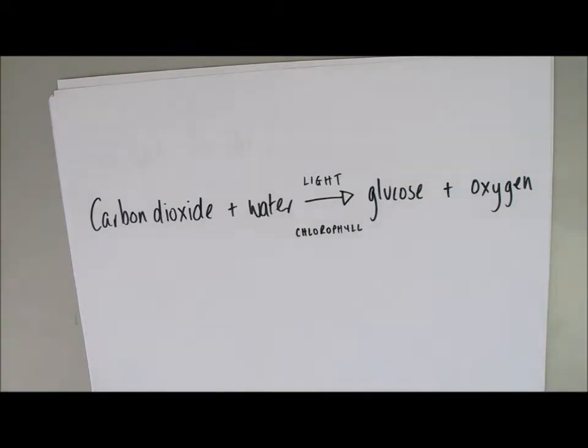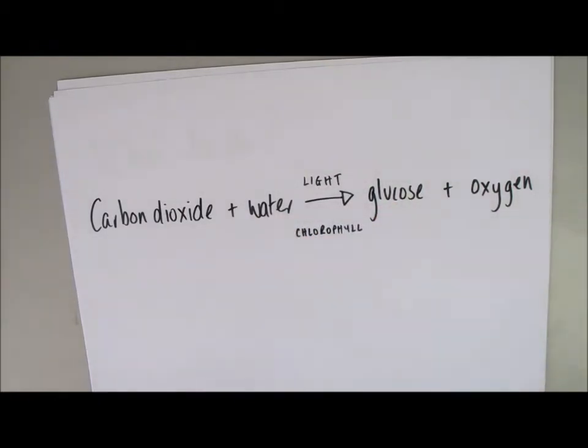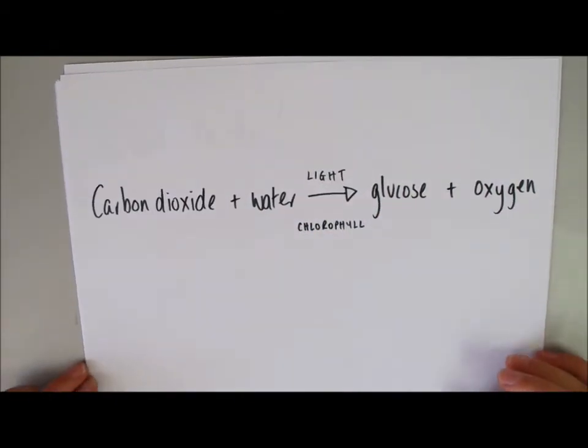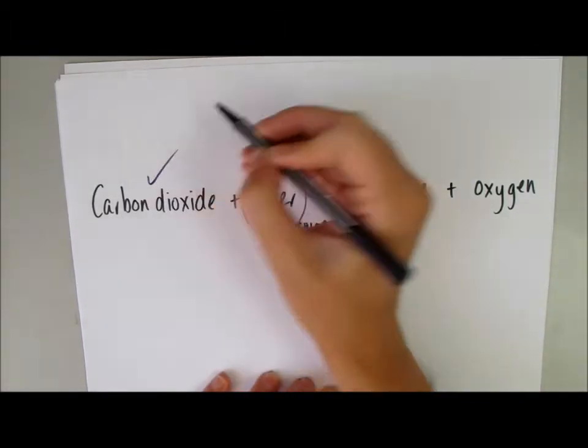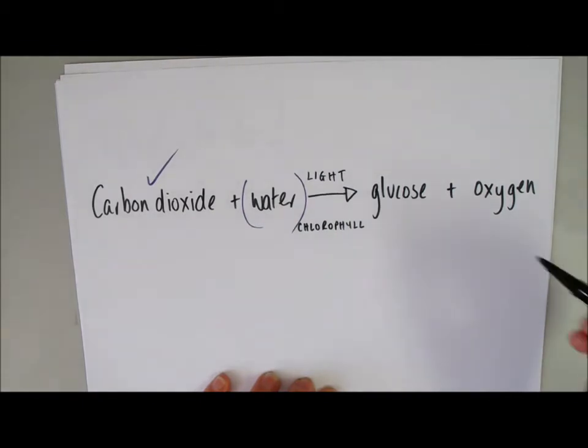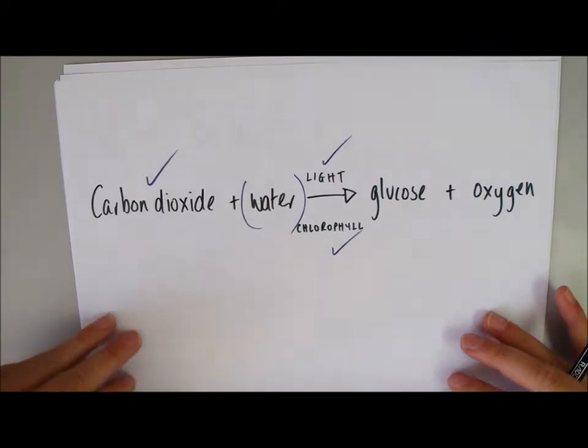Now, the problem is, if you do anything that gets rid of water in the plant, you tend to kill the plant, because water is required for such a great amount of metabolic function. So, we can't really test for the presence of water, but we can test to check that carbon dioxide is required, that light is required, and that chlorophyll is required. And that is exactly what we're going to do.